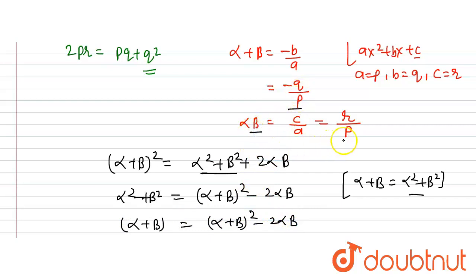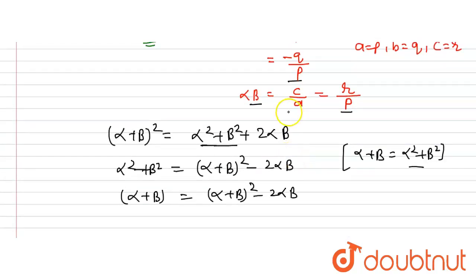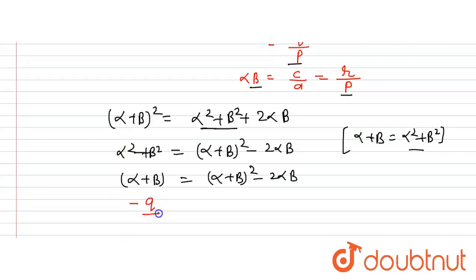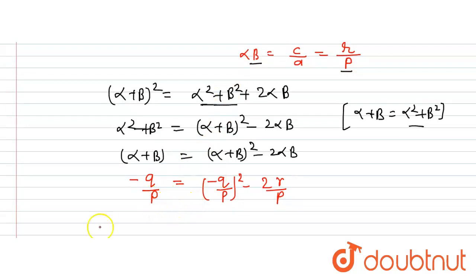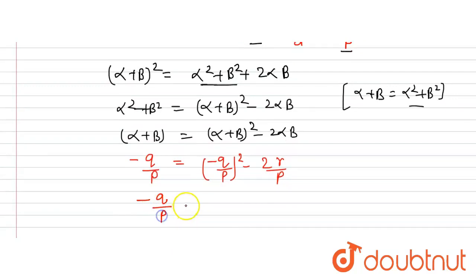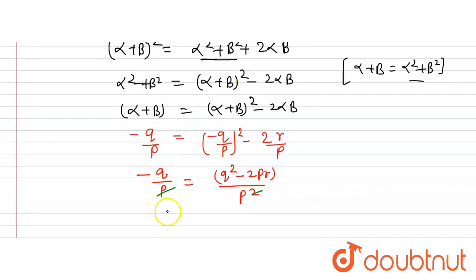We know alpha + beta = -q/p and alpha·beta = r/p. Substituting into the equation: -q/p = (-q/p)² - 2·(r/p). This gives -q/p = q²/p² - 2r/p. Taking p² as LCM on the right hand side: left hand side is q/p and right hand side is q² - 2pr over p².